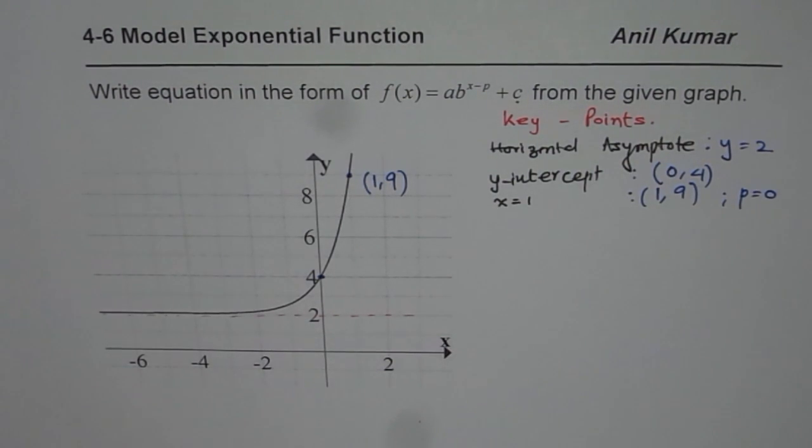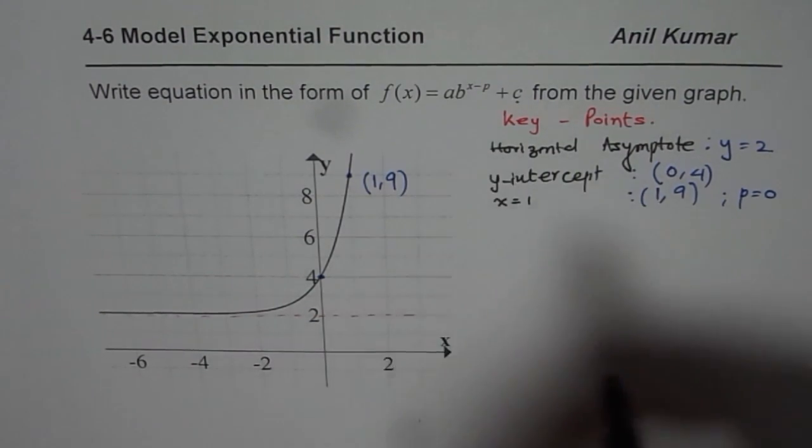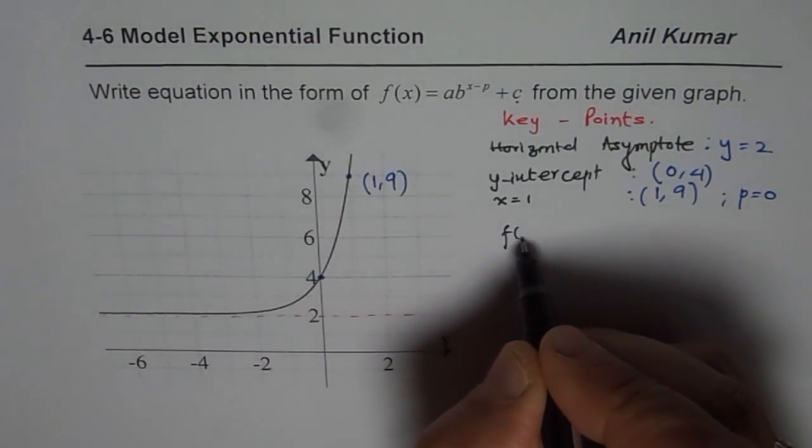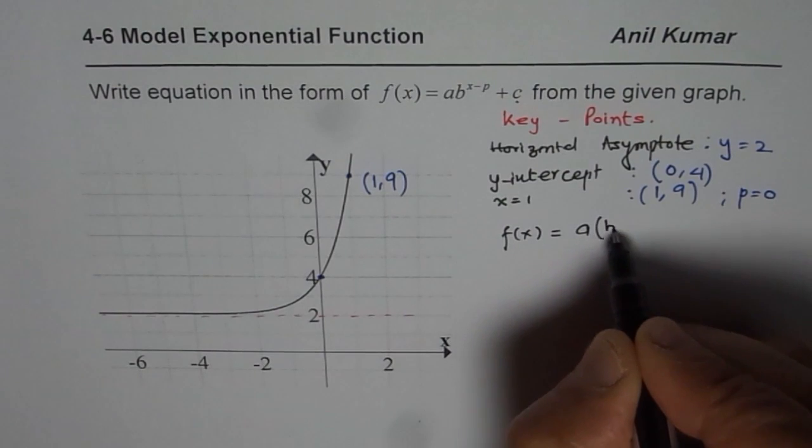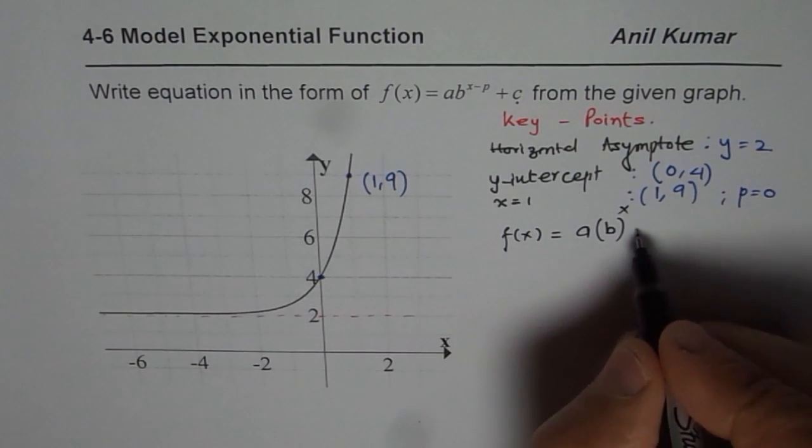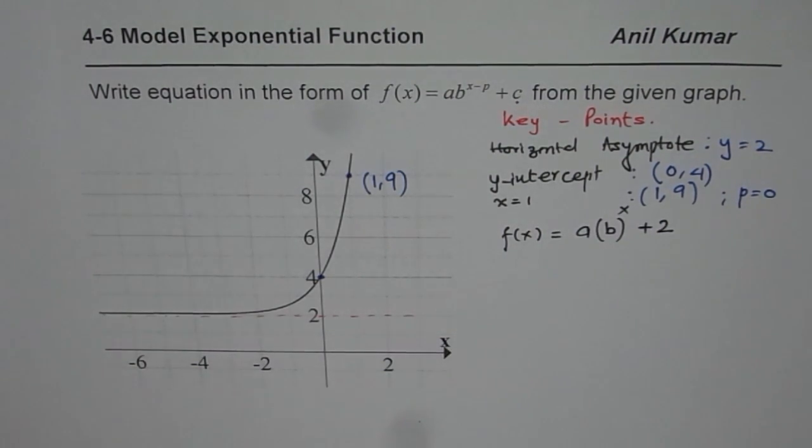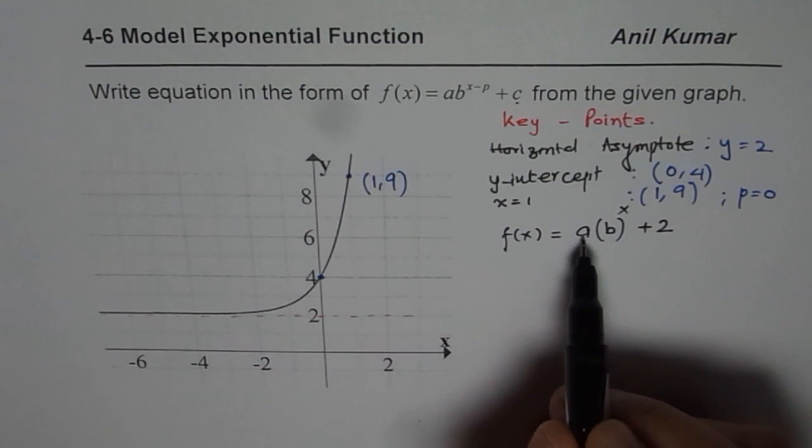Now from this we can write down whatever we have got in our equation. So we already have f(x) = a times—we do not know what base is—base to the power of x plus c, we know is 2 for us. So this is what we have already got. Now using these points we can find the value of a and b.